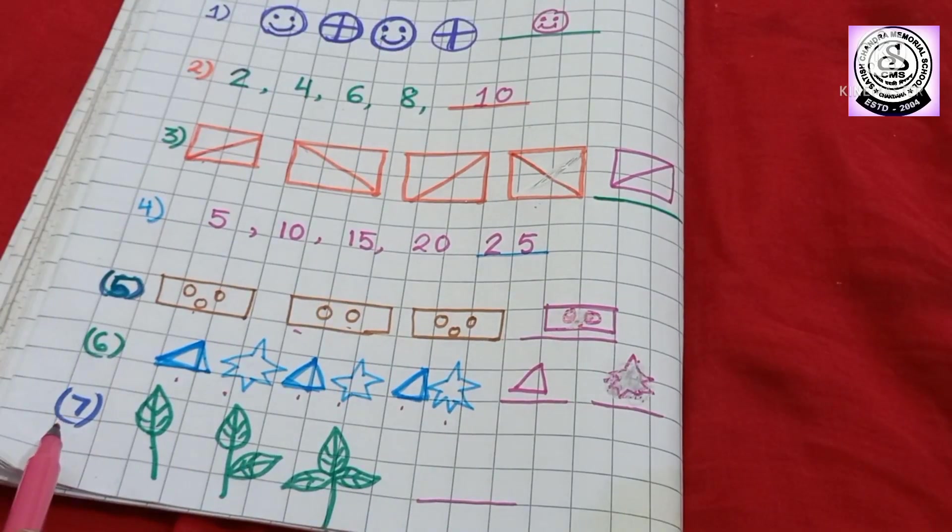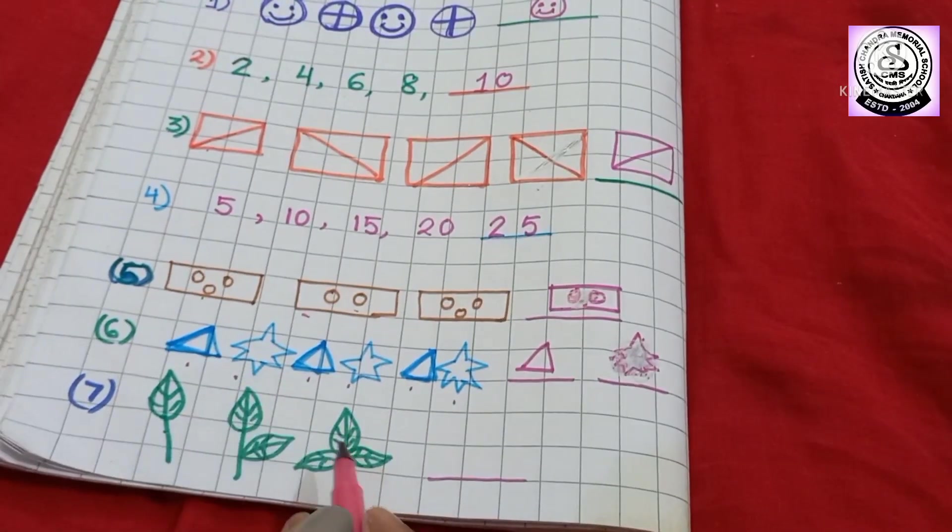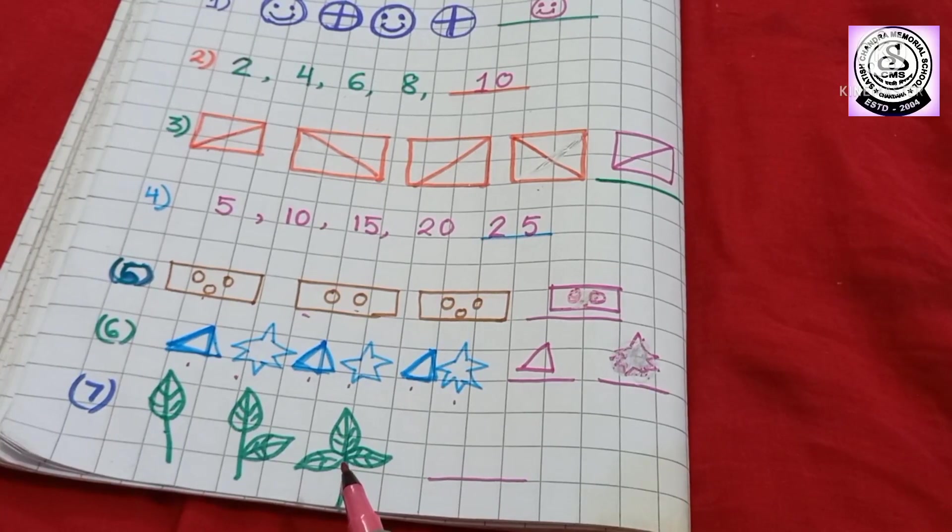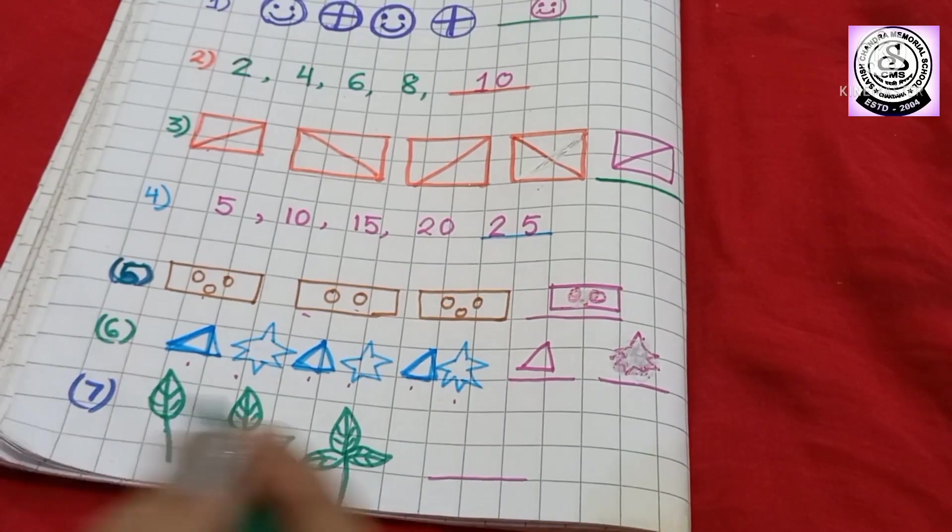Then, number 7. First, I have drawn 1 leaf. Only 1. Then, 1, 2. Then, after 2, I have drawn 3 leaves. So, what do you have to do? You have to draw how many leaves? 4.